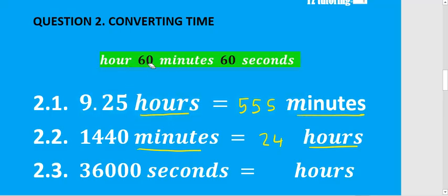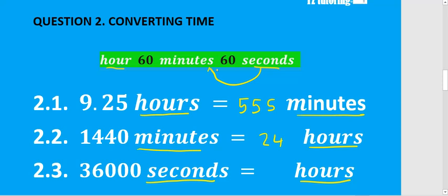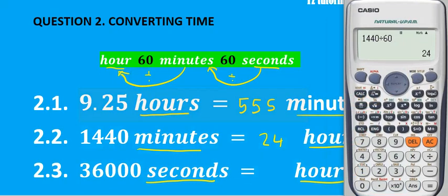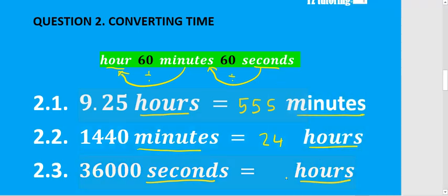For 2.3 we want to convert seconds all the way to hours — but again we cannot jump. First go from seconds to minutes by dividing by 60, then from minutes to hours by dividing by 60 again. So 36,000 seconds divided by 60, then divided by 60 again gives you 10 hours.